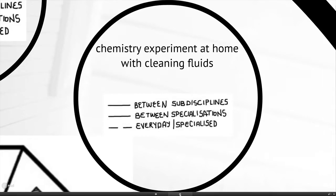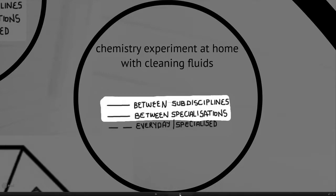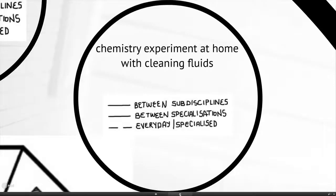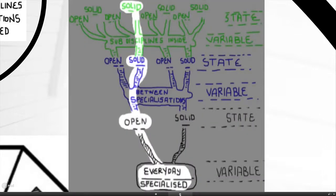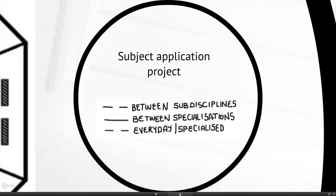The trick is to start thinking about the other seven variations that are possible. What would happen if the everyday-specialized relationship was open, but you still kept the relationship between specializations and sub-disciplines closed? We can imagine a similar situation in chemistry — a very tight definition within the subject and its sub-discipline — but the teacher says: 'Now go home and actually play around with some chemicals, play around with your cleaning fluids and let's see what it produces.' There you can see a situation where you've opened up chemistry to the everyday, creating a particular possibility space in terms of how curriculum operates.